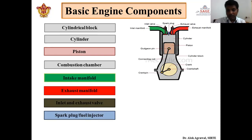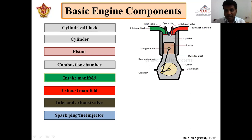Next is the spark plug or fuel injector. In IC engines, on the basis of the ignition system, the engine is classified into two types: spark ignition engine and compression ignition engine. In a spark ignition engine, a spark plug is required, and in a compression ignition engine, a fuel injector is required. So depending upon which type of engine we are talking about, it is either a spark plug or a fuel injector.